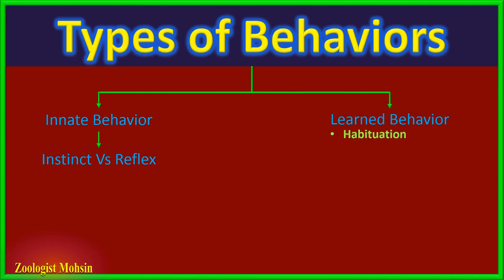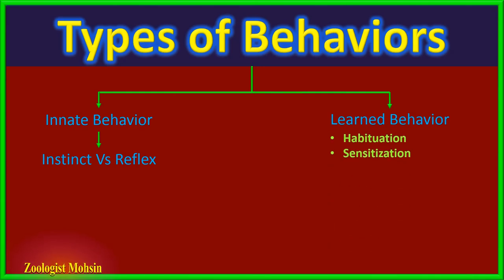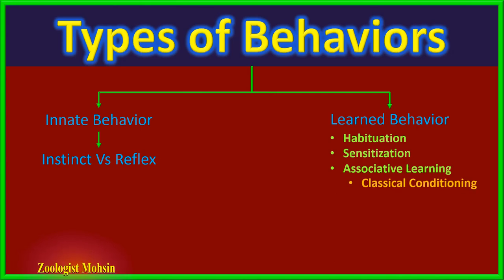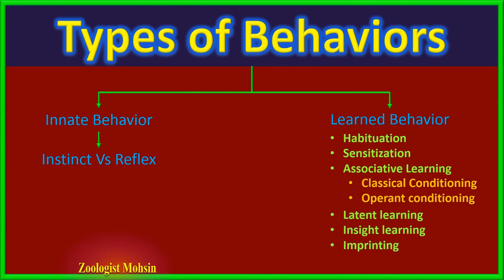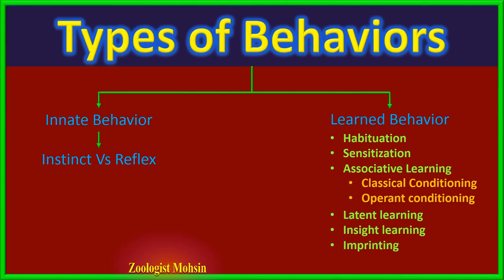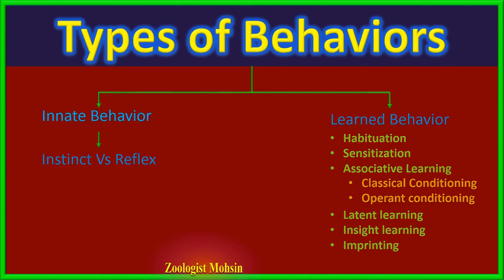Learned behavior is further divided into various types like habituation, sensitization, associative learning — which may be classical conditioning and operant conditioning — latent learning, insight learning, and imprinting. We shall discuss all types in detail with the best available examples to make you learn for all time.